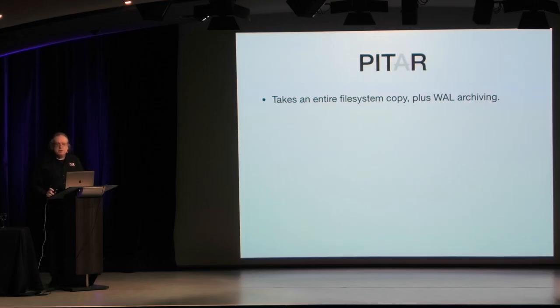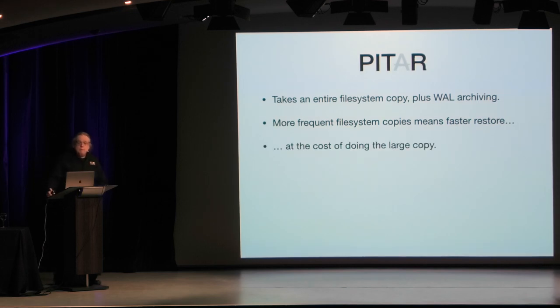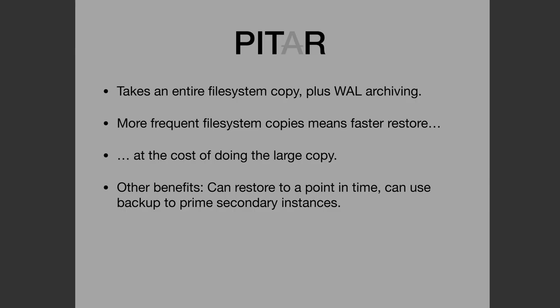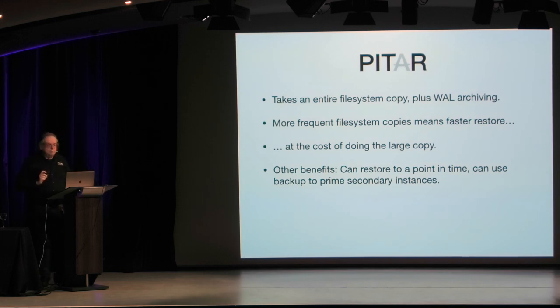PITR backups take an entire file system copy plus WAL archiving. More frequent file system copies means you can restore faster, but you have to do this large copy every time. You can do delta backups and things like that, which can accelerate it, but ultimately you are going to be copying a lot of files. There are lots of advantages to a PITR backup - you can restore to a point in time, thus the name. So if you need to restore to 10 a.m. yesterday from a backup taken at 10 a.m. this morning, you can do that, assuming you have all the write-ahead log segments. And you can use the backup to prime new secondaries, which is very handy.